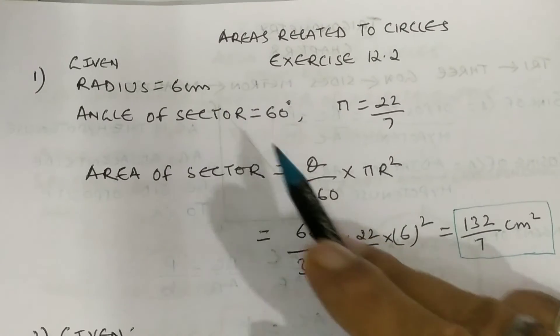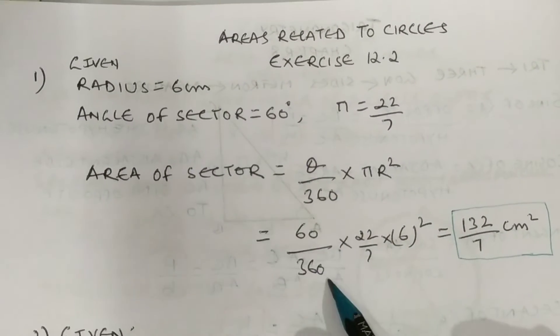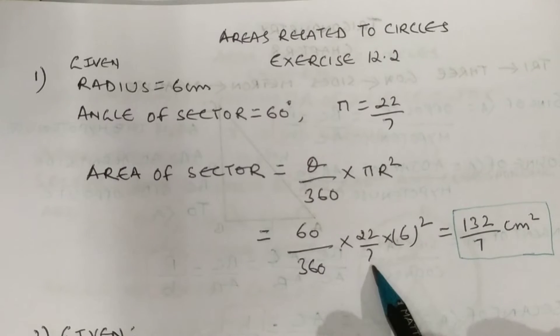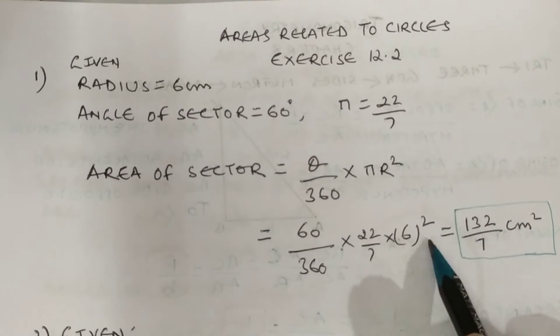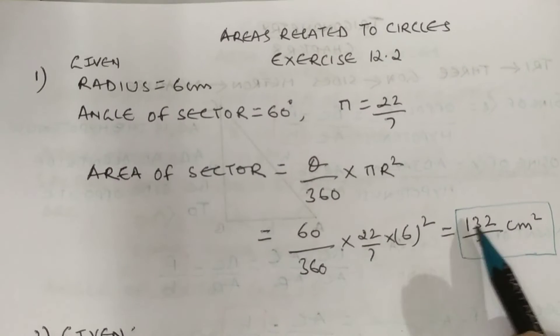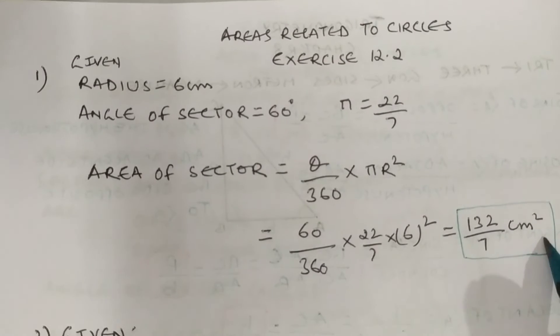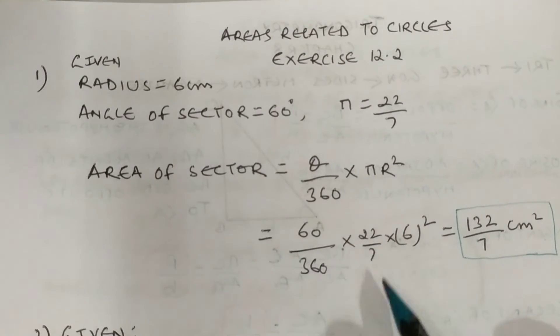Plugging in the values into this formula, we get 60 upon 360 into 22 upon 7 into 6 whole squared. That comes out to be 132 upon 7 cm squared. This is our answer.